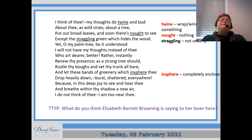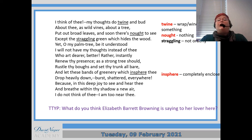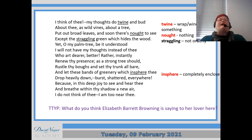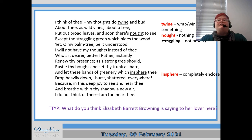'Yet oh my palm tree' — that's a term of endearment for him, like a pet name. She then says 'be it understood I will not have my thoughts instead of thee' — she'd rather he was actually there than just think about him. 'Instantly renew thy presence' — just come back and be with me. 'As a strong tree should rustle thy boughs and set thy trunk all bare' — that could be a sexual reference, getting his body out; the boughs would be his arms and legs, and the trunk may again reference his penis.